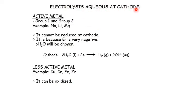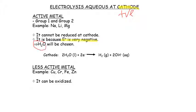At the cathode, we always choose the species with the more positive standard reduction potential. Active Group 1 and Group 2 metals — such as sodium, lithium, and magnesium — cannot be reduced at the cathode because their standard reduction potentials are very negative. Therefore, water is chosen instead, and hydrogen gas is formed. Less active metals such as copper, silver, chromium, iron, and zinc can be reduced at the cathode.